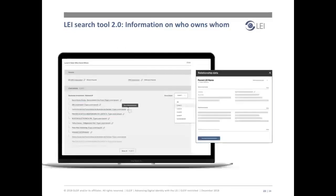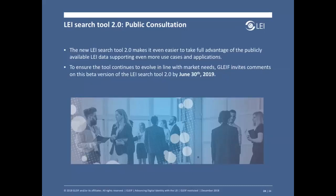In summary, the LEI offers market participants a standardized, one-stop approach to entity verification in the digital age. It facilitates quick access to consistent and accurate information on both client organizations and other business partners and suppliers. The new LEI search tool 2.0 makes it even easier to take full advantage of the publicly available LEI data, supporting even more use cases and applications. To ensure the tool continues to evolve in line with market needs, GLEIF invites comments on this beta version by June 30, 2019. Information on how to participate in this public consultation can be found on the GLEIF website once launched on December 11, 2018.